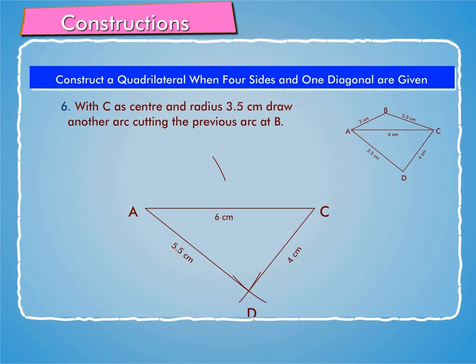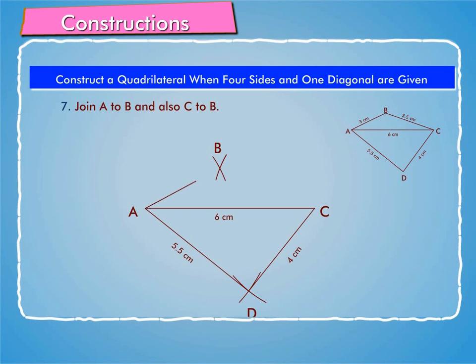Step 6: With C as center and radius 3.5 cm, draw another arc cutting the previous arc at B. Step 7: Join A to B and also C to B.